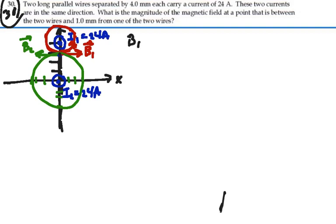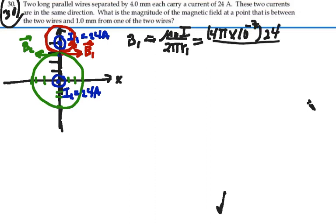Let's calculate the two magnetic fields. We have B1, which is equal to mu naught I over 2 pi R1. And that's equal to 4 pi times 10 to the minus 7 times the current, 24 amps, over 2 pi times R1, which would be 1 millimeter away, 1 times 10 to the minus 3. So I have 2 times 10 to the minus 7 times 24, divided by 1 times 10 to the minus 3, 4.8 times 10 to the minus 3.